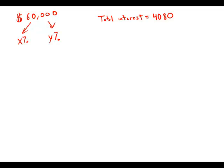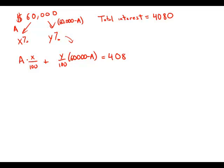Let's say that the amount invested at interest rate X was A. That means the rest — $60,000 minus A — was invested at Y. The interest made by the amount invested at X is A times X over 100. The interest made at Y is Y over 100 times ($60,000 minus A). The sum of these two is the total interest.